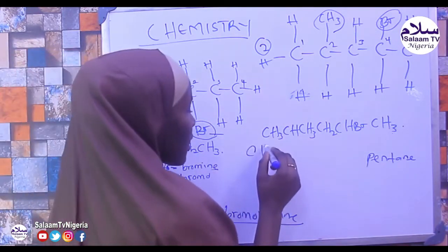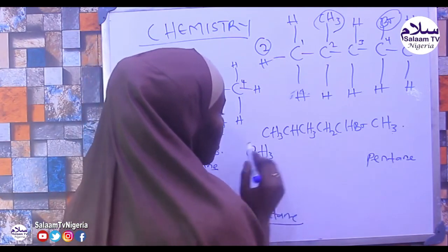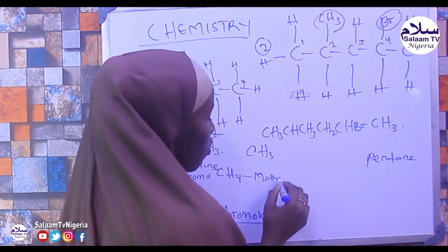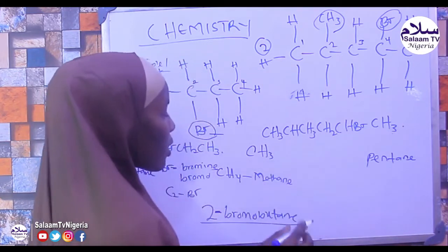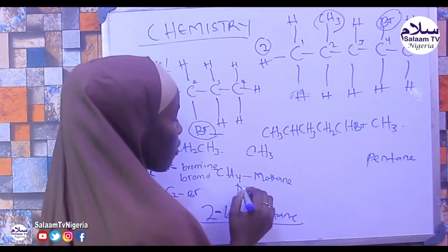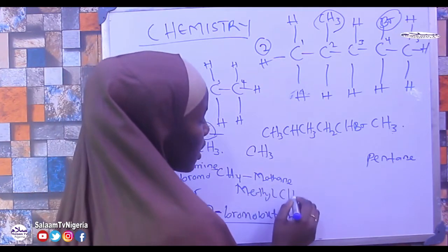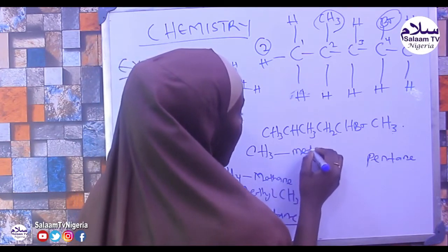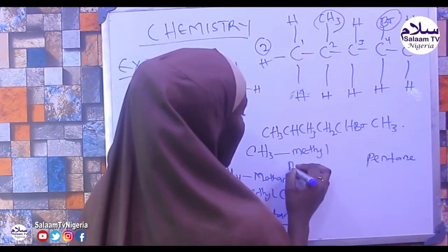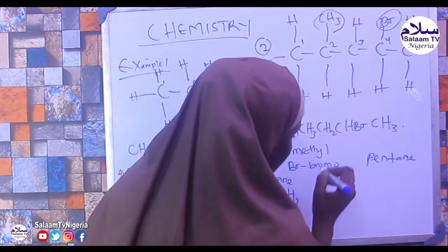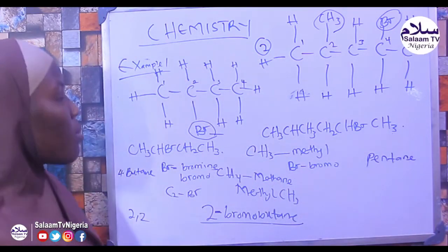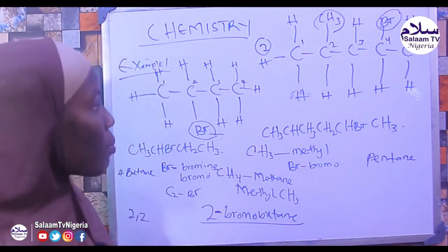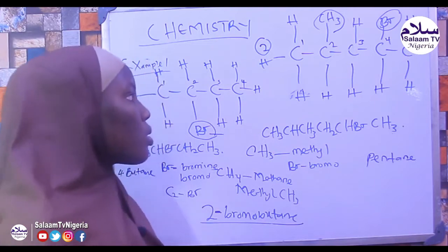CH3 is actually CH4 losing one hydrogen, which is methane losing one hydrogen, therefore it becomes CH3 — so one substituent is methyl. And Br is bromo. So we have methyl at position 2 and bromo at position 4.